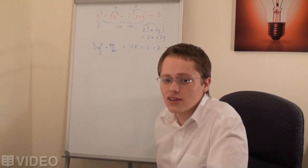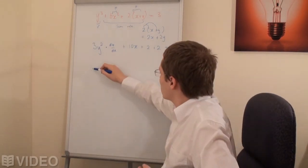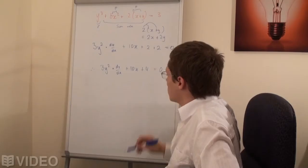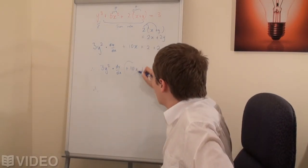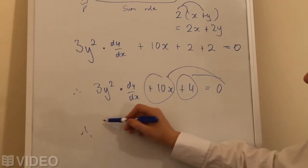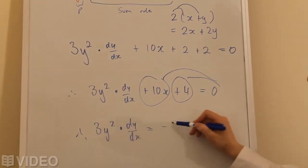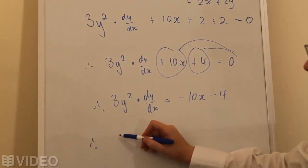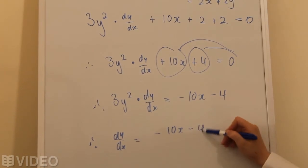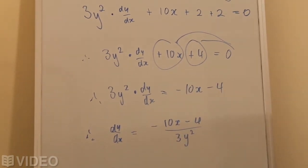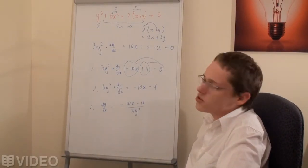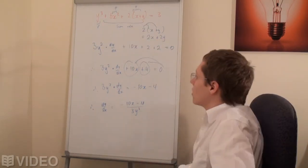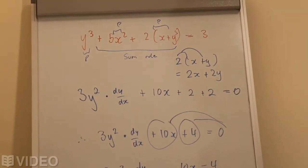Moving 10x and 4 to the other side gives 3y²·(dy/dx) = −10x − 4. Dividing both sides by 3y² yields dy/dx = (−10x − 4) / (3y²). Now I want to modify the example slightly — changing the bracket term to 2(x + y³) — to show what happens when we end up with two dy/dx terms on the same side of the equation. I'll keep everything else the same so we can move through it quickly.